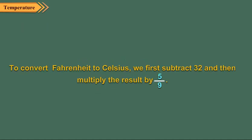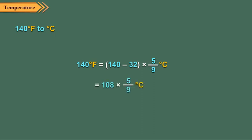To convert Fahrenheit to Celsius, we first subtract 32 and then multiply the result by 5 upon 9. For example, to convert 140 degrees Fahrenheit to degree Celsius, we first subtract 32 from 140 to get 108. Then we multiply 108 by 5 upon 9 to get the required temperature as 60 degrees Celsius.